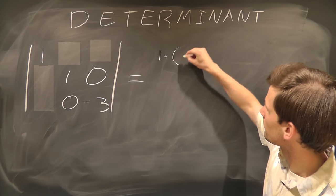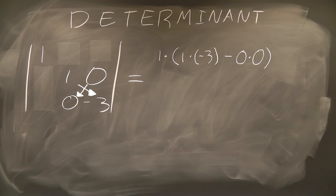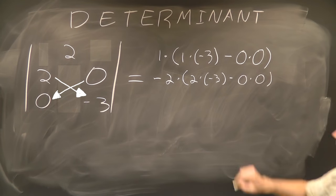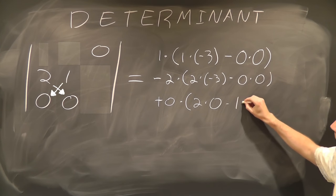It will be 1 times 1 times negative 3 minus 0 times 0, subtracting 2 times 2 times negative 3 minus 0 times 0, plus 0 times 2 times 0 minus 1 times 0.